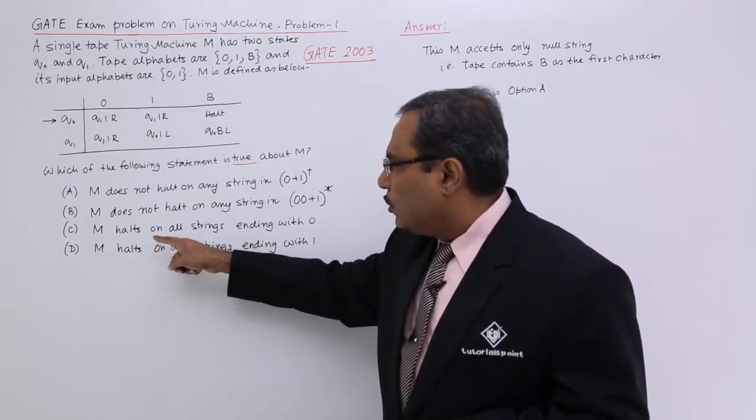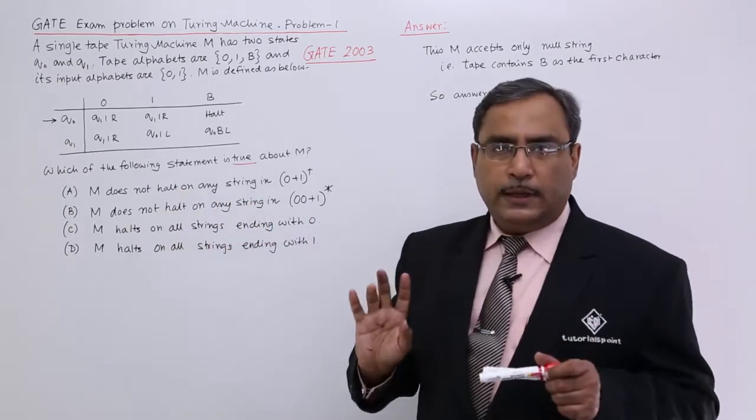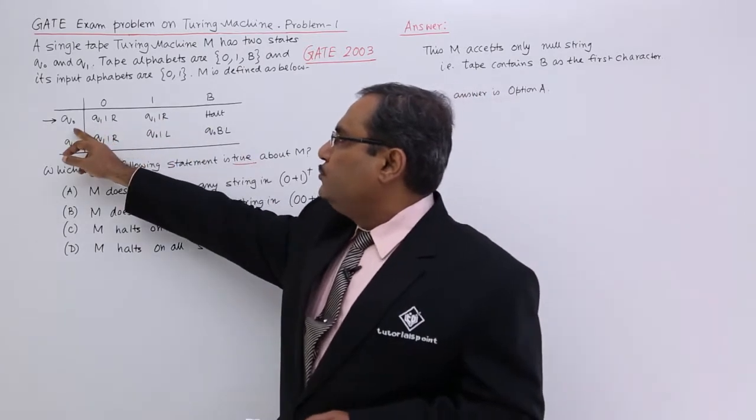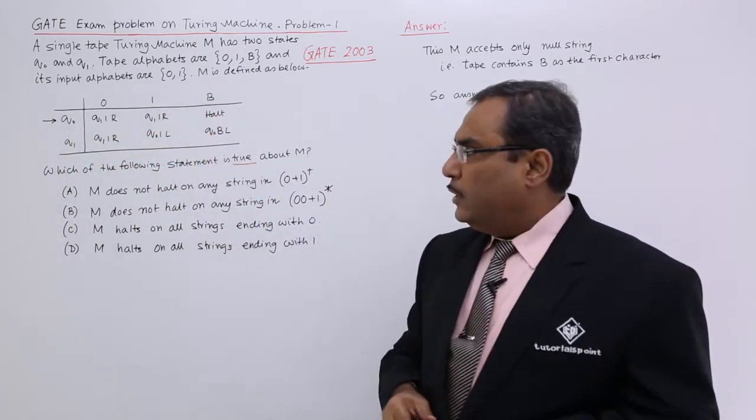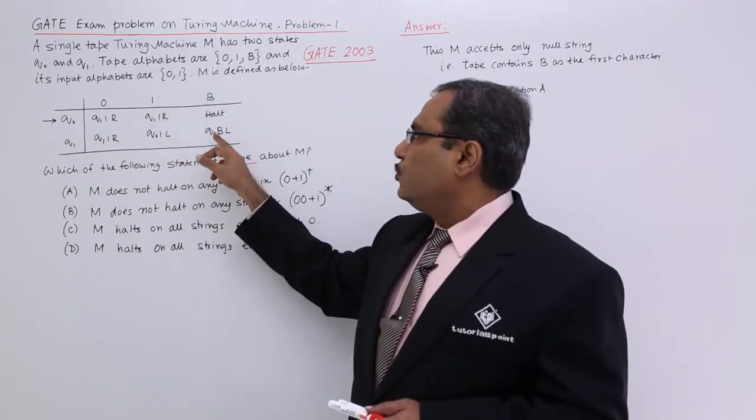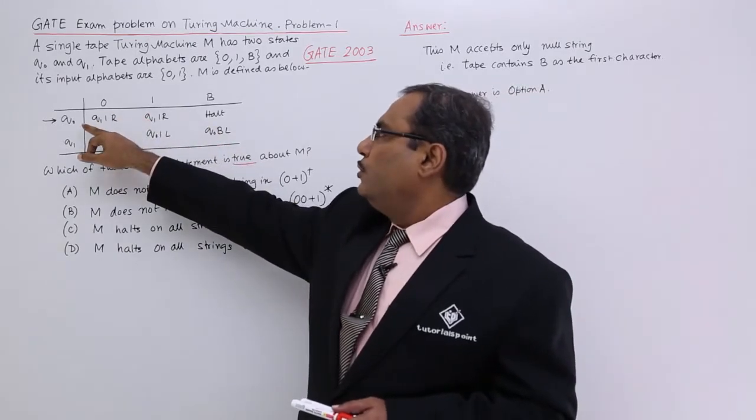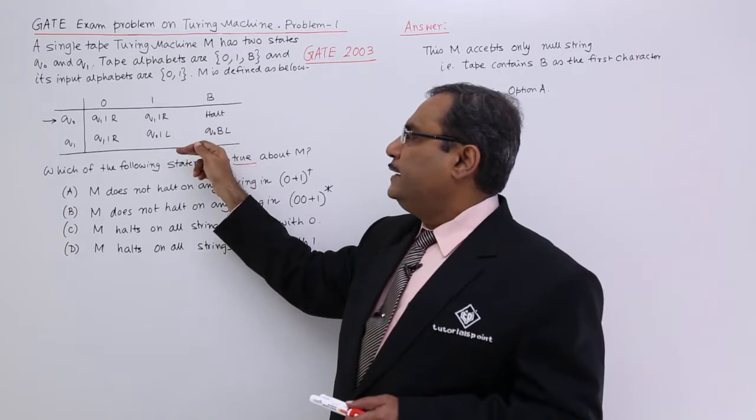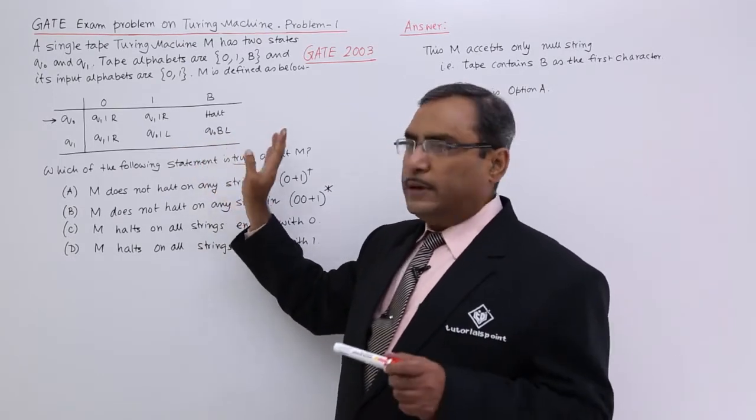Here you see the Turing machine will halt only for Q0, B because at Q1, B also it is going to Q0 and then it is going towards the left whatever has been mentioned.